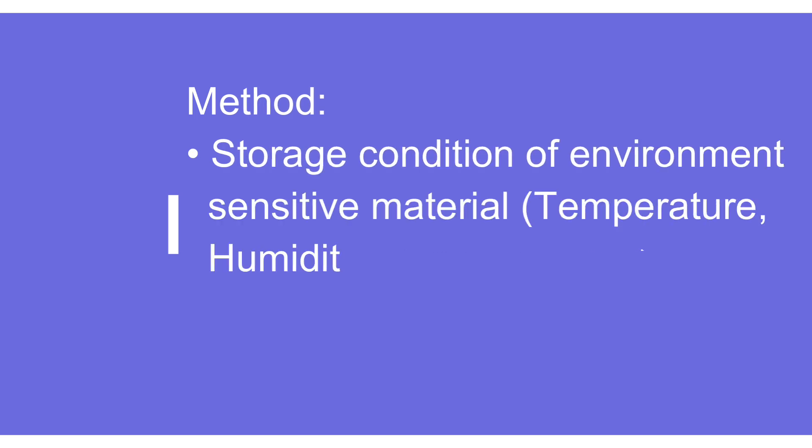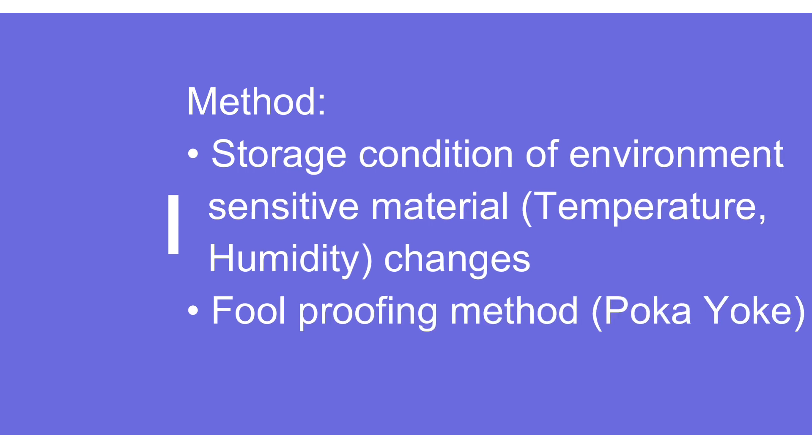When we talk about method, the intent is whatever method we are using with respect to a particular process that we are changing. For example, we may have a certain environment for storing material — humidity of less than 50% or a temperature between 20 to 25 degrees — and because of any reason we are changing that. How do we deal with that situation? Or say we have implemented a poka-yoke and it is not working — whatever product is coming out at that time, are we making sure it fulfills requirements and non-conforming material is not going out?